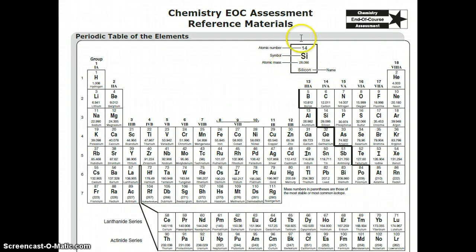So keep in mind that the periodic table does include up here the atomic number. This is the number of protons, and in a neutral atom it is also the number of electrons in that atom.